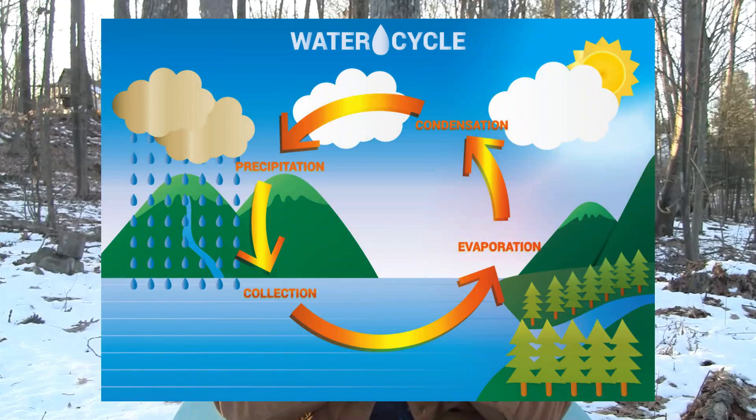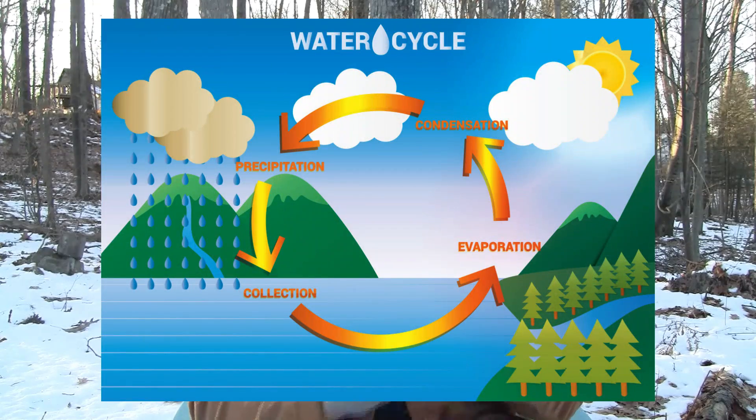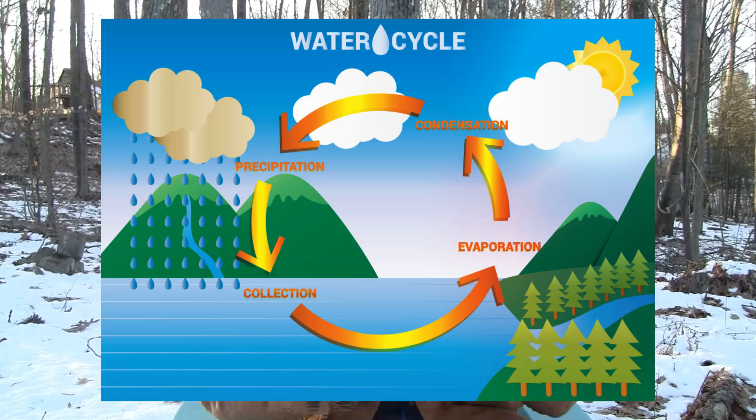So the major steps in a water cycle are evaporation, condensation, precipitation, and collection.